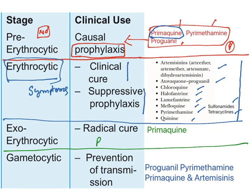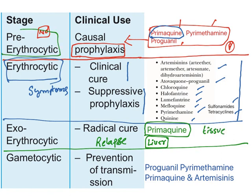For the exo-erythrocytic stage, which is responsible for relapse — some Plasmodium species lie dormant in the liver and after some time cause relapsing malaria — the drug used is primaquine. Primaquine is tissue-specific, acting in the liver at both the pre-erythrocytic and exo-erythrocytic stages. It is used to cure relapsing malaria and is therefore called a radical cure.